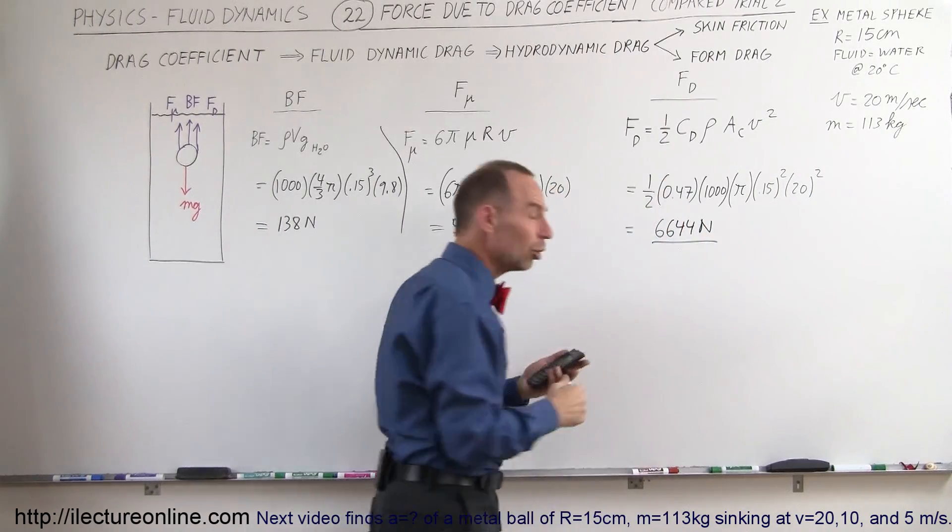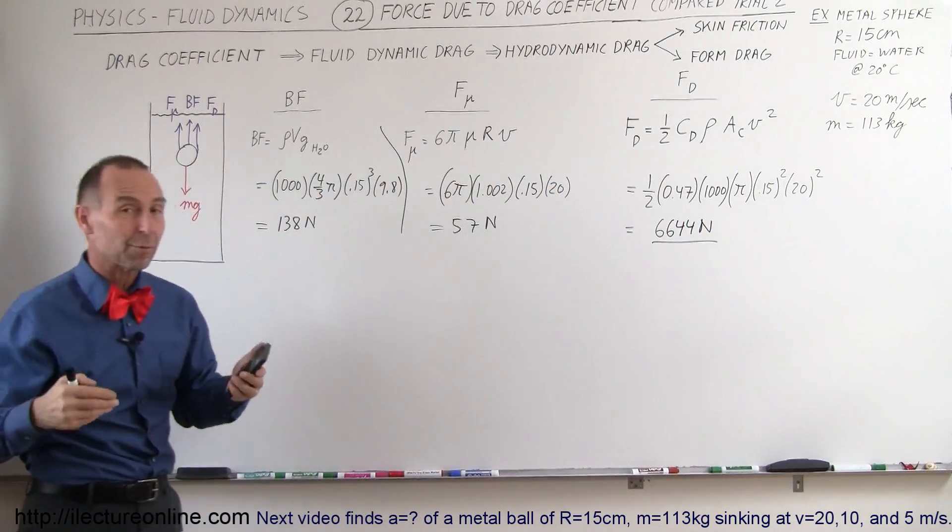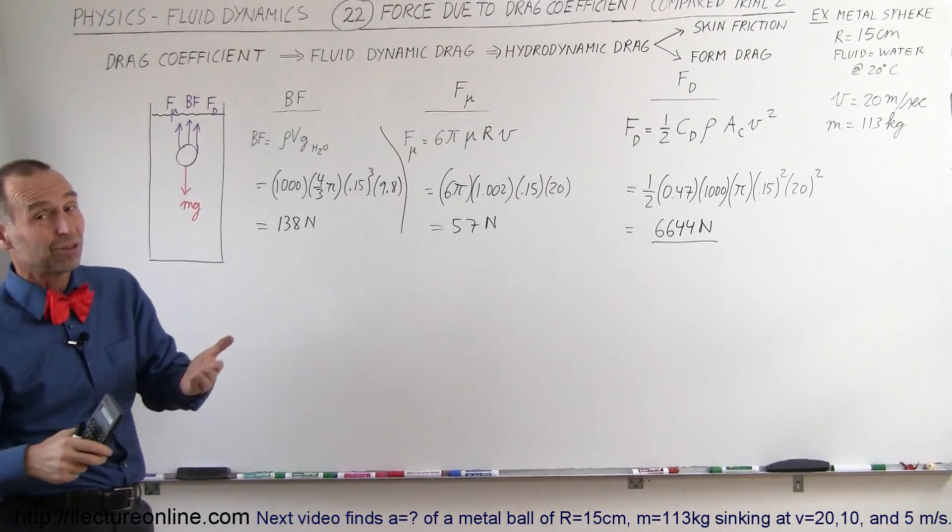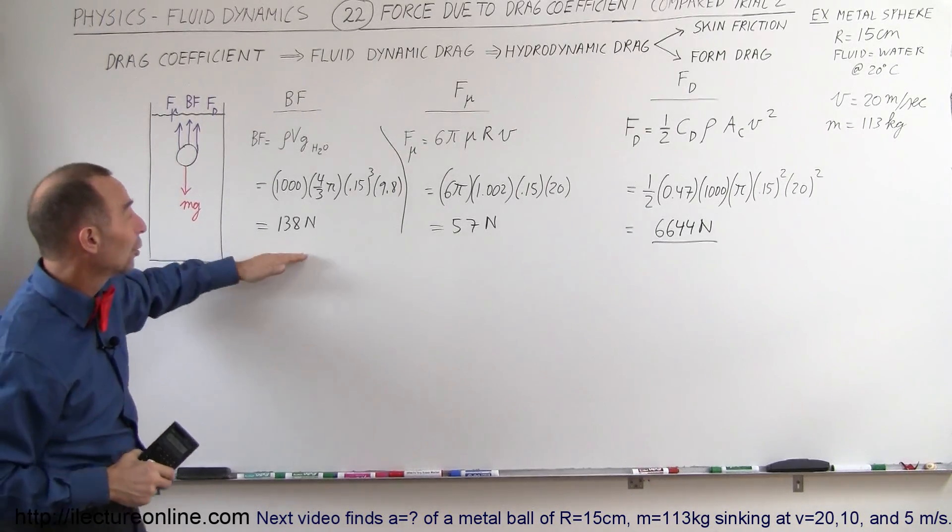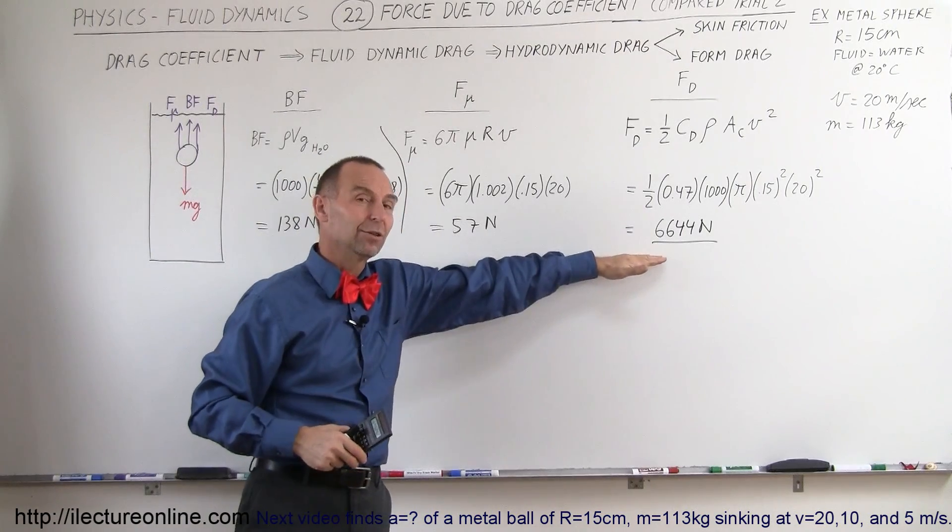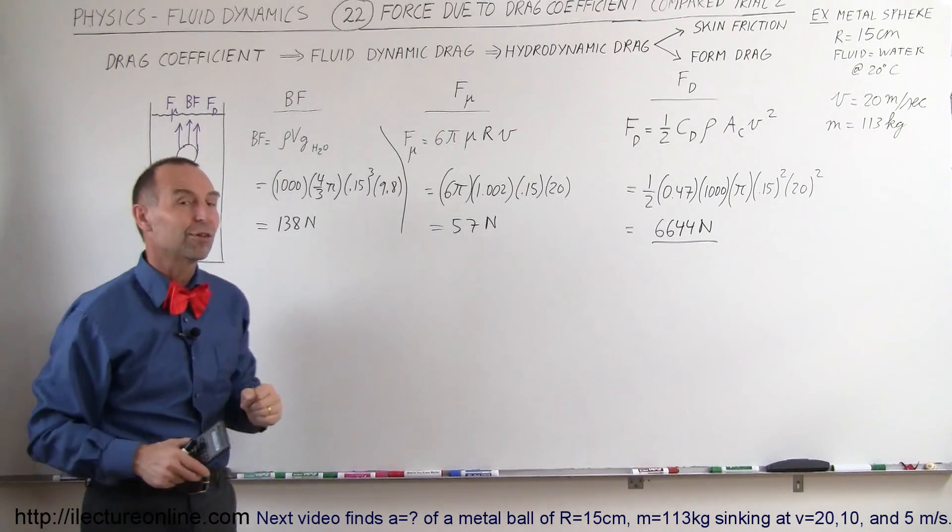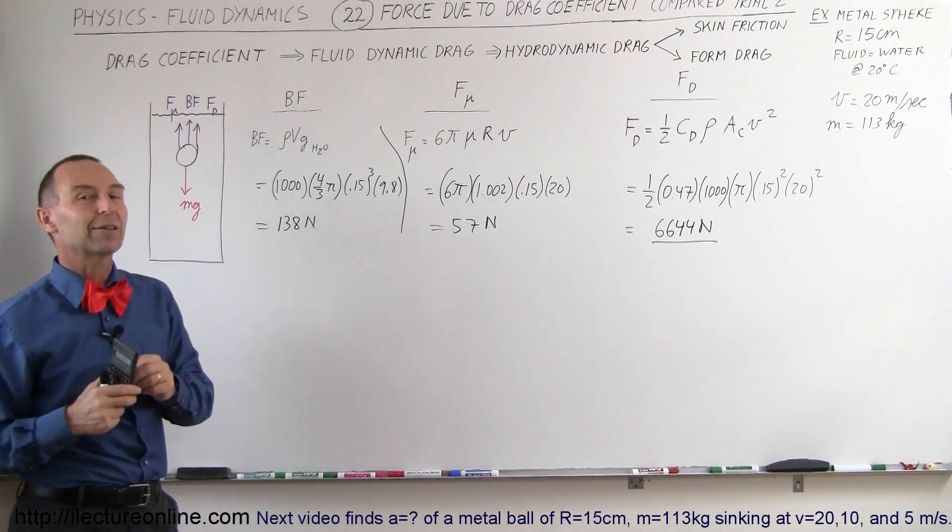Notice what a much larger force that is. So here we have a much larger object moving through a fluid at very high velocities. 20 meters per second is a very high velocity, and notice how much bigger the drag forces are compared to the forces caused by the viscosity and the buoyancy force. So it's completely turned around.